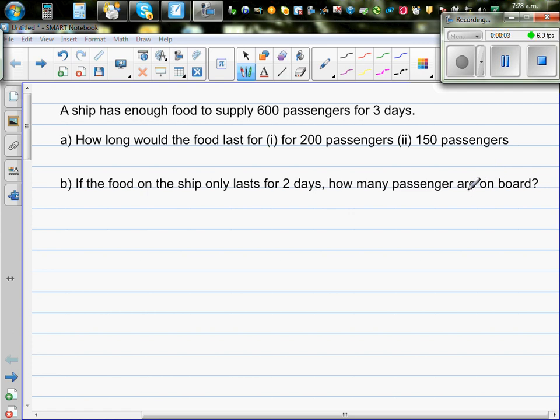A ship has enough food supply for 600 passengers for 3 days. How long would it last for 200 passengers and 150 passengers? If the food on the ship only lasts for 2 days, how many passengers are on board? This is an example of inverse proportion.